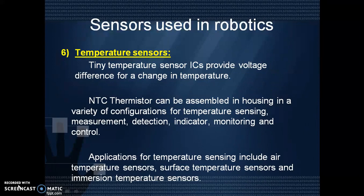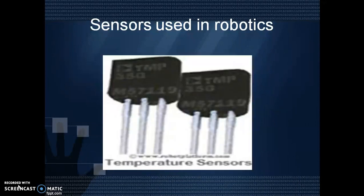The sixth one is temperature sensors. Tiny temperature sensor ICs provide a voltage difference for a change in temperature. An NTC thermistor can be assembled in housing in a variety of configurations for temperature sensing, measurement, detection, indication, monitoring, and control. Applications for temperature sensing include air temperature sensor, surface temperature sensor, and so on. This is a temperature sensor.